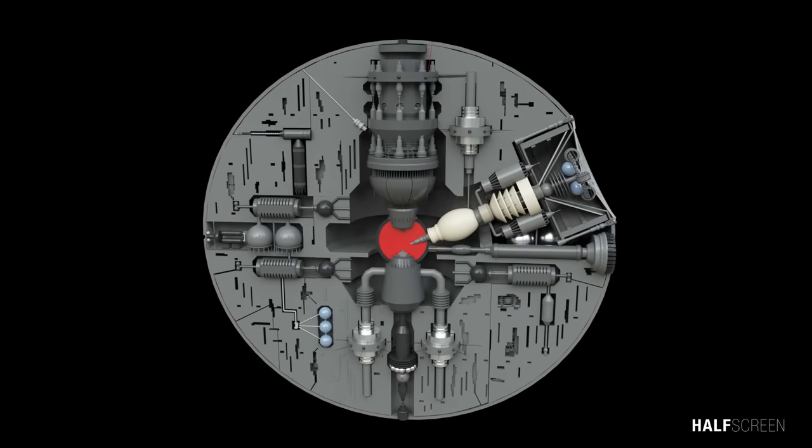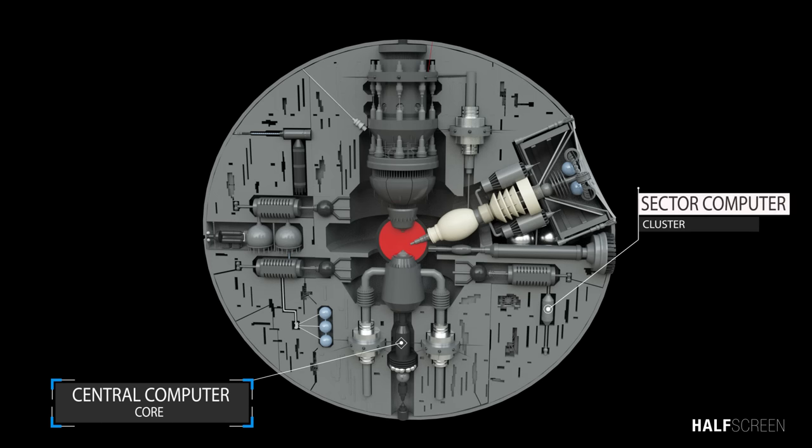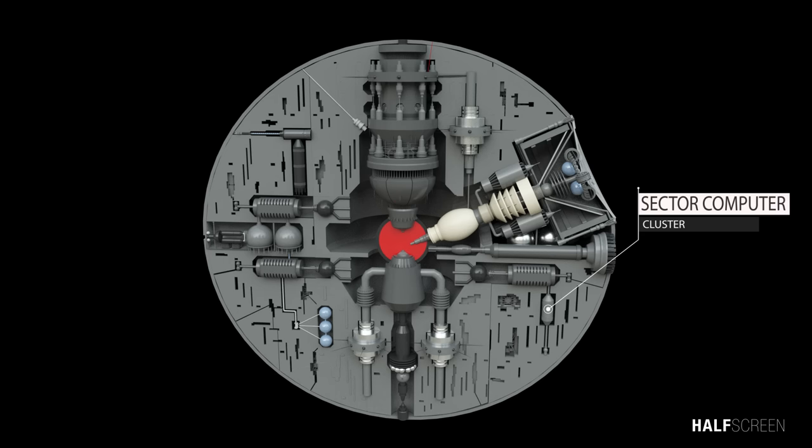All information collected by the Death Star's bridge, sensor arrays, communication centers, and space traffic control were routed through the station's central and sector computers as well as displayed on banks of monitors and holoprojectors situated throughout the overbridge.